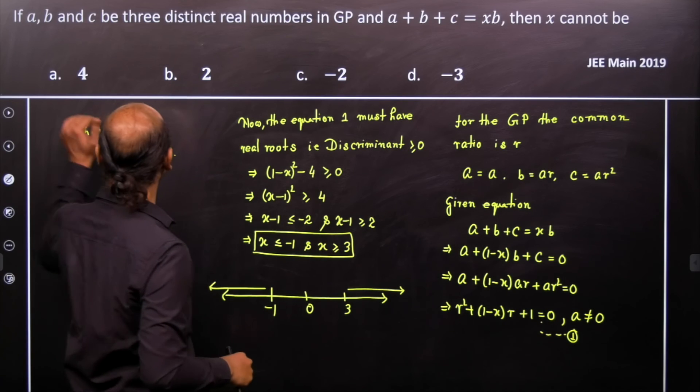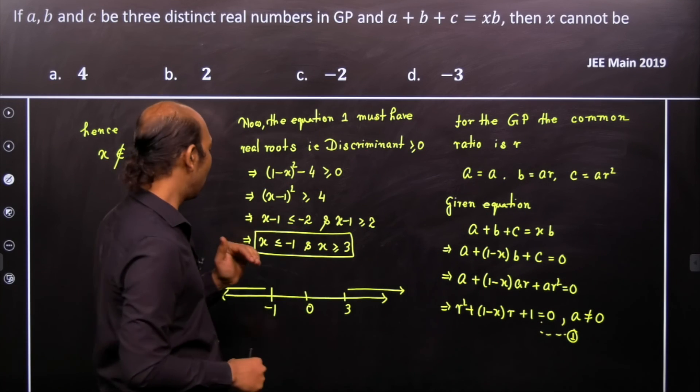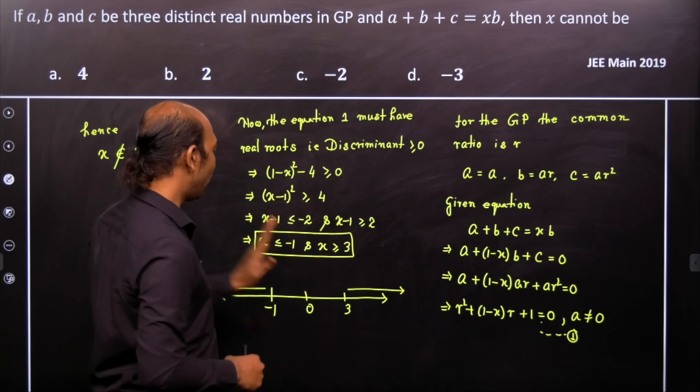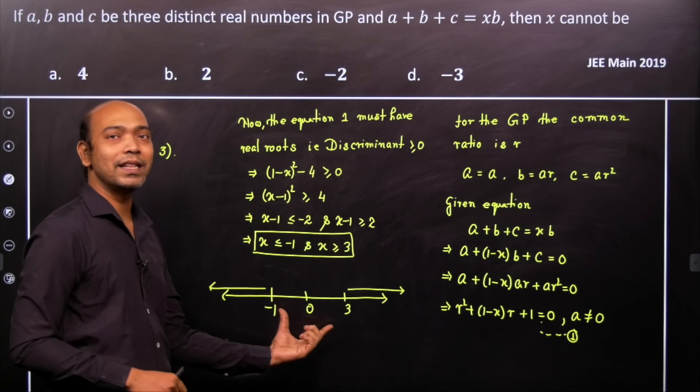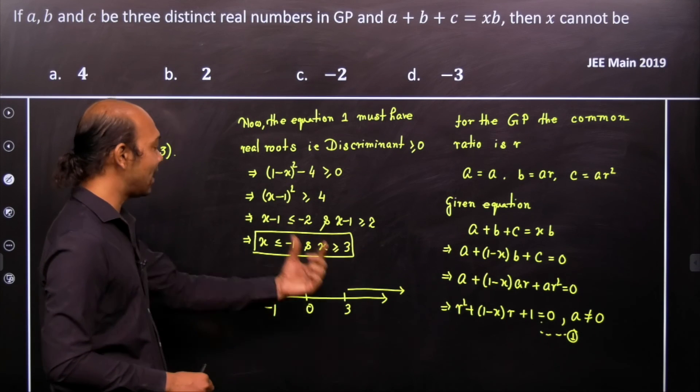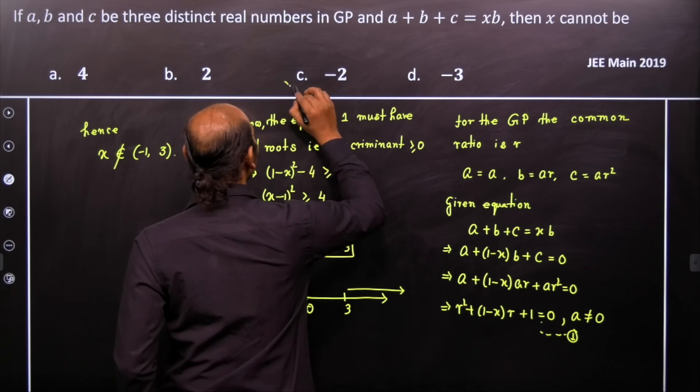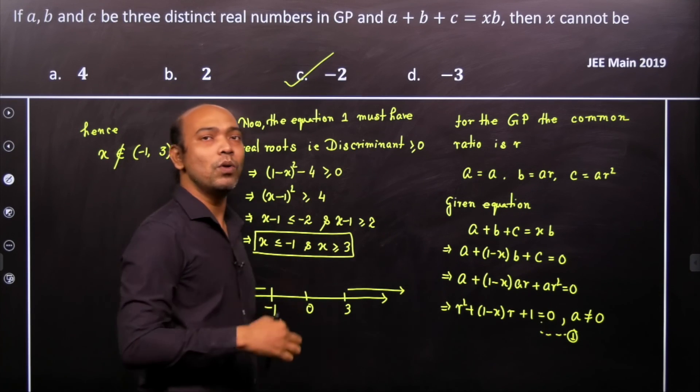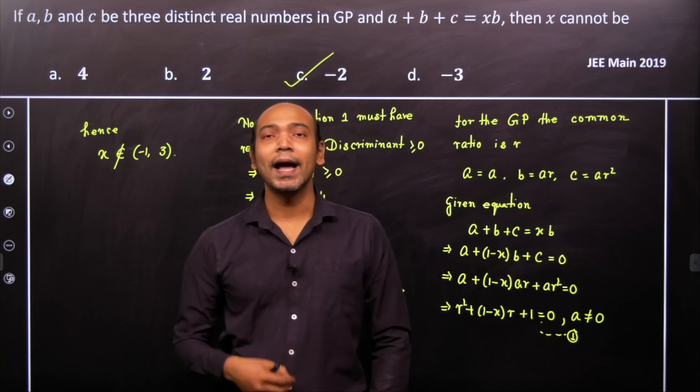Now, let's check all the values. 4 belongs to the other side. 2 obviously lies between -1 and 3. -2 is outside, -3 is outside. Therefore, you can see that in this case, option c is the only available option where x cannot take that value, and that's it.